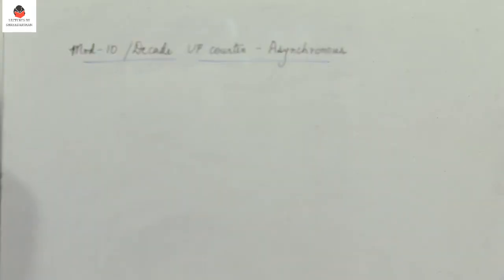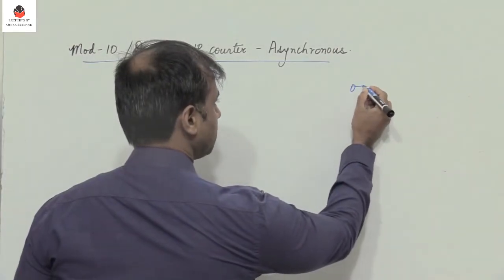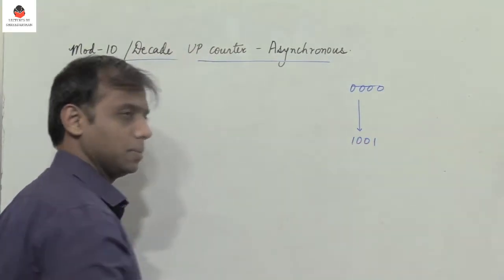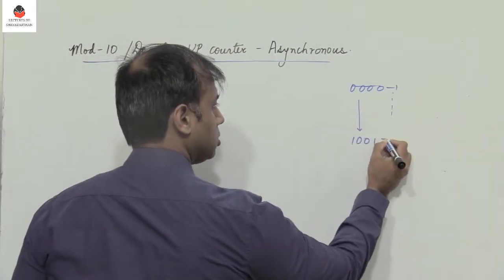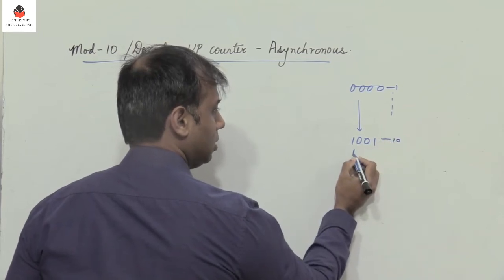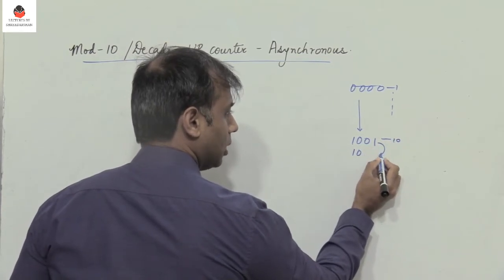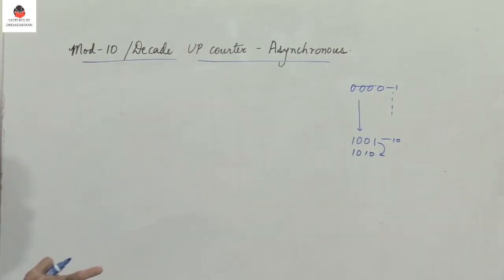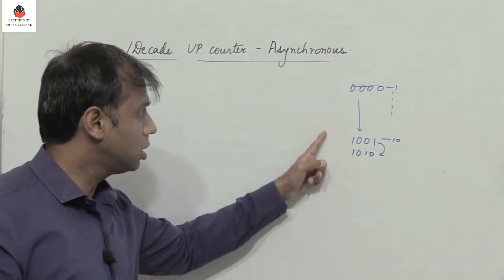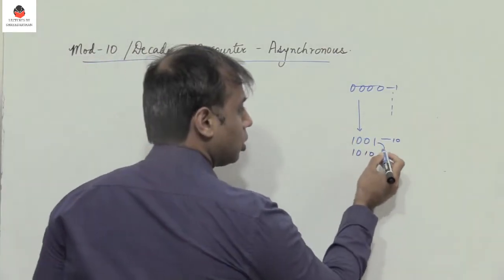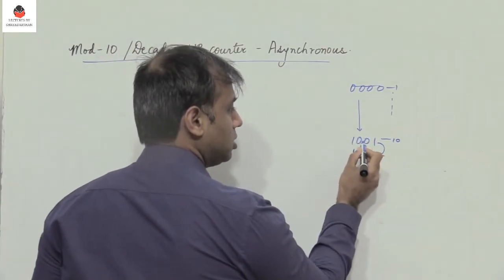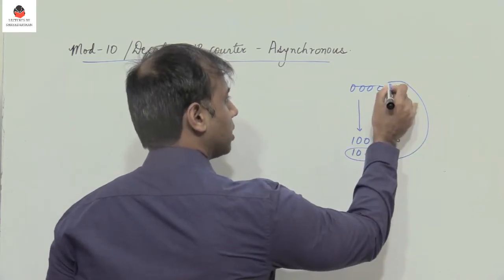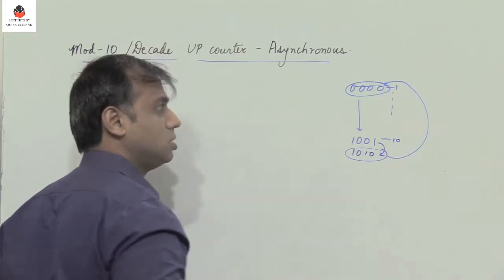When we talk about a decade or mod 10 counter, the count basically starts from 0000 up to 1001. So this is count 0 to count 9, and then from 1001 it moves to 1010. At that point the counter must come back to 0, back to the initial state.